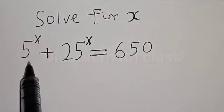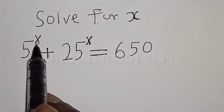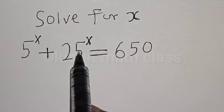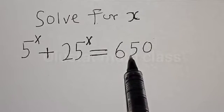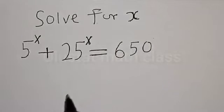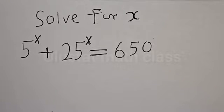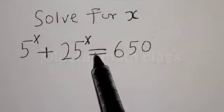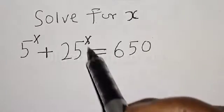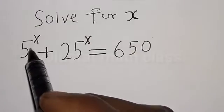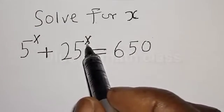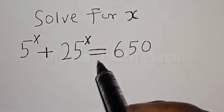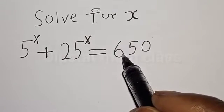Solve for x. If 5 raised to power s plus 25 raised to power of s is equal to 650. Hi everyone, welcome to my class. In this class, we quickly want to find the value of s from this given exponential equation: 5 raised to power of s plus 25 raised to power of s is equal to 650.